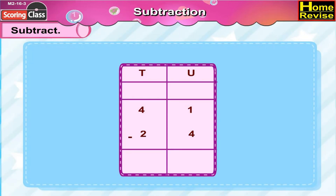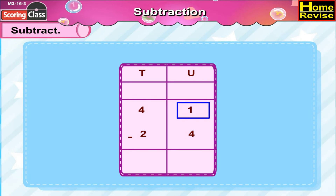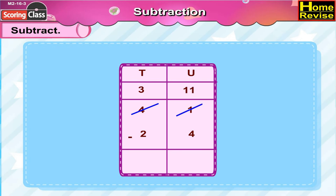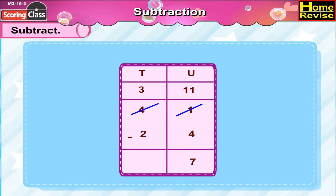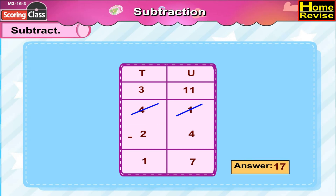41 minus 24 — that is 4 tenths 1 unit minus 2 tenths 4 units. Since 4 cannot be subtracted from 1, we rewrite as 3 tenths 11 units. 11 units minus 4 units is 7, and 3 minus 2 is 1, so 41 minus 24 is 17.